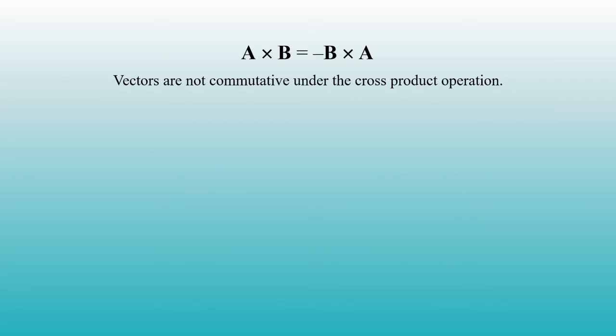For example, you probably know that the cross product is not commutative — A cross B is not equal to B cross A, although it is anti-commutative, which in practice is almost as good. Still, what does it mean that an operation central to so many physics problems doesn't behave itself? This is telling us something. Well, it gets worse.